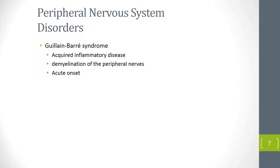The autonomic nervous system can also be involved, creating dangers of cardiac arrhythmias and autonomic dysfunction symptoms such as sweating, facial flushing, and urinary retention. Patients with autonomic dysfunction may also have orthostatic hypotension and significant pain. Guillain-Barré syndrome can be a medical emergency.